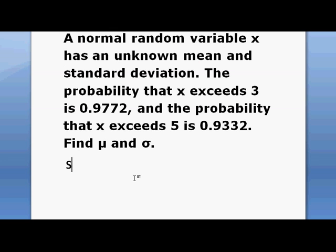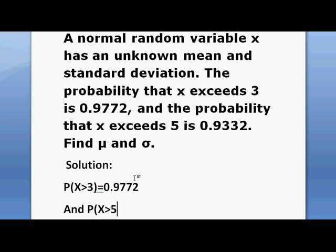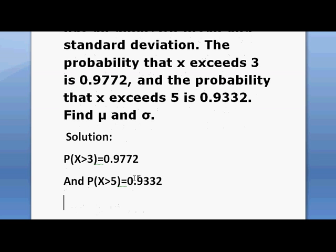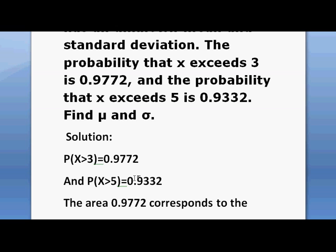We have probability x is greater than 3 equals 0.9772, and probability x is greater than 5 equals 0.9332. If we see the normal table, we find that the area 0.9772 corresponds to the z-score 2.